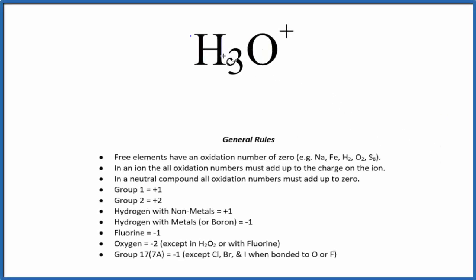To find the oxidation numbers for each element in H3O+, the hydronium ion, we'll use these rules. When we go down our rules, we see that hydrogen, when bonded to a non-metal—oxygen's a non-metal—is plus one.